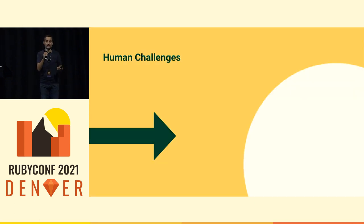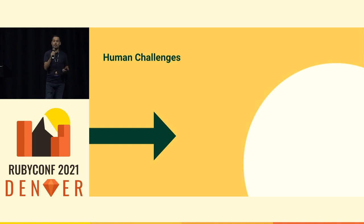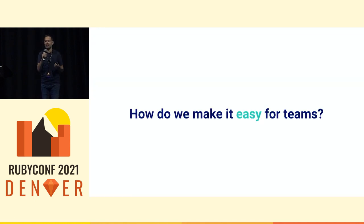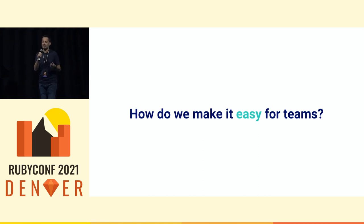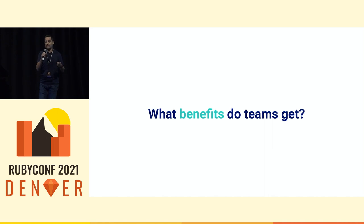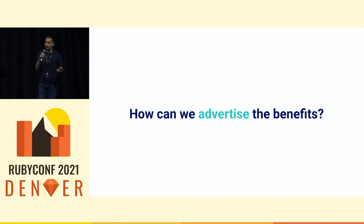Before we embarked on this journey, there were a few challenges we needed to solve. As a technical team, it's very easy to concentrate on technical challenges, but the more important problems are the human challenges. How do we make it easy for teams to adopt gradual typing in our code base? If you can't solve that, adoption is going to falter. What benefits do those teams get through adoption? If we don't explain that very clearly, people will not adopt. And more importantly, how do we advertise those benefits? It's not enough that the benefits are there — they need to be understandable and knowable by the people.